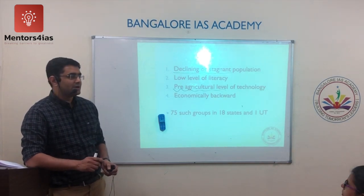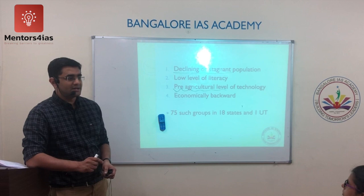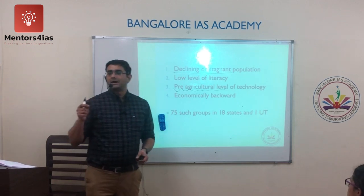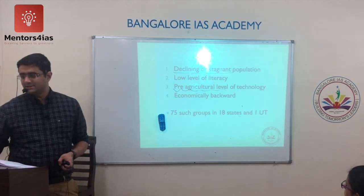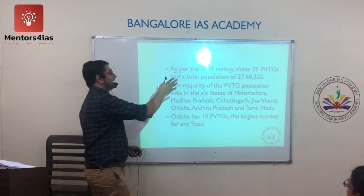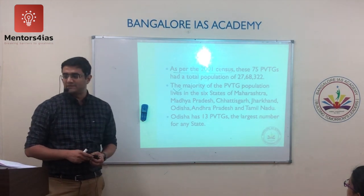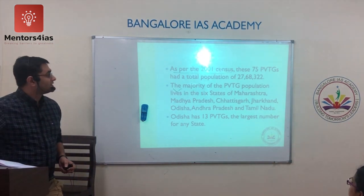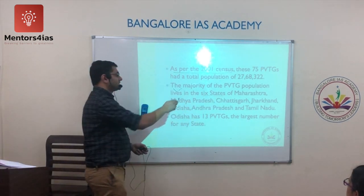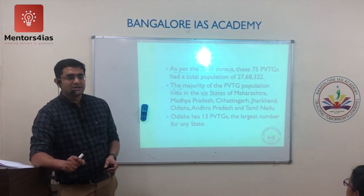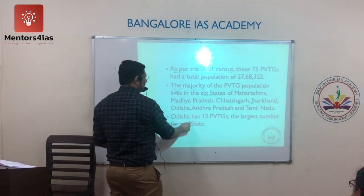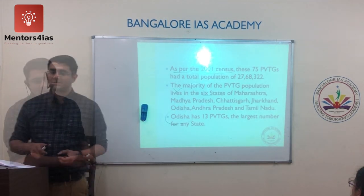Tribes identified as PVTG are socio-economically very backward. They are distributed across 18 states and Andaman and Nicobar Island. As per the 2001 census, 75 groups have been identified as PVTG, with a population of around 27 lakh. The majority live in six states: Maharashtra, Madhya Pradesh, Chhattisgarh, Jharkhand, Odisha, Andhra Pradesh, and Tamil Nadu. Odisha has the largest number of PVTGs.